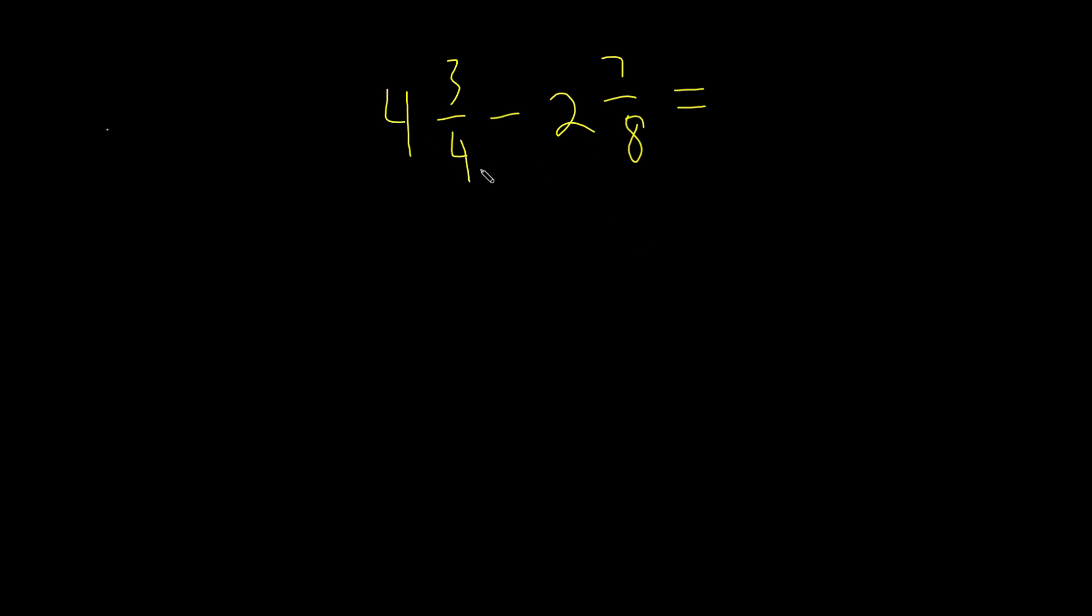So let's convert 4 and 3 fourths first. 4 times 4, that's 16. 16 plus 3 is 19, and we keep our old denominator. Minus 2 times 8 is 16, 16 plus 7 is 23, over, we keep our old denominator.